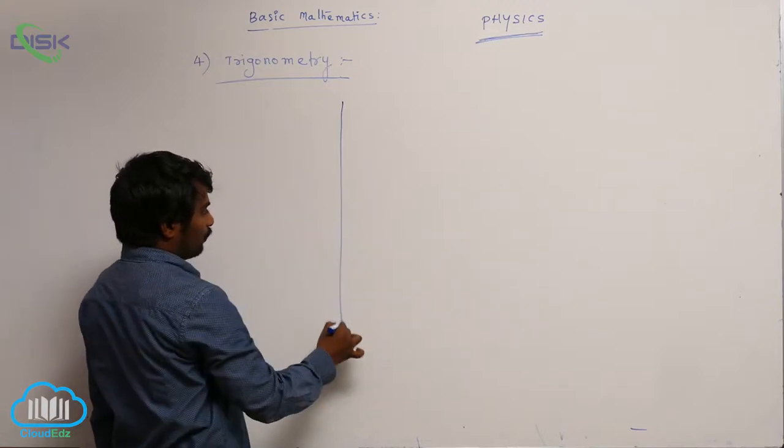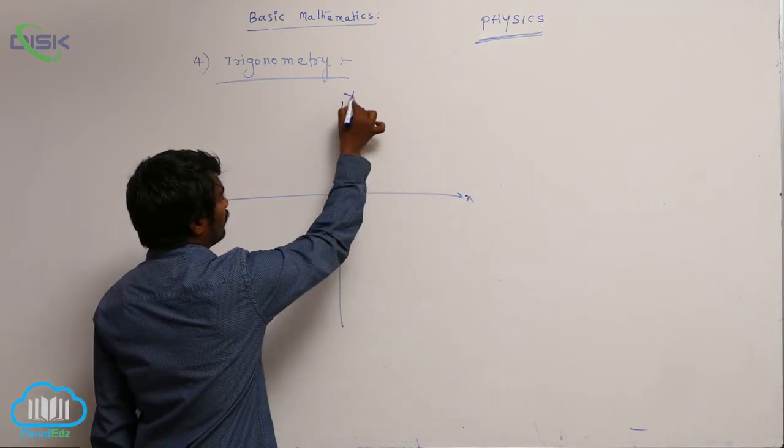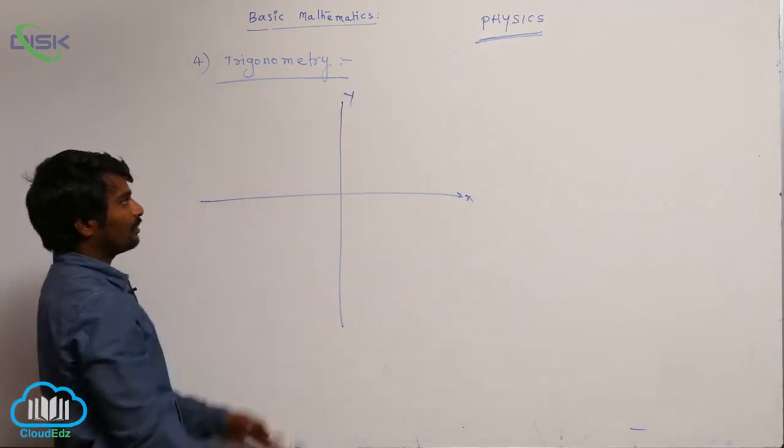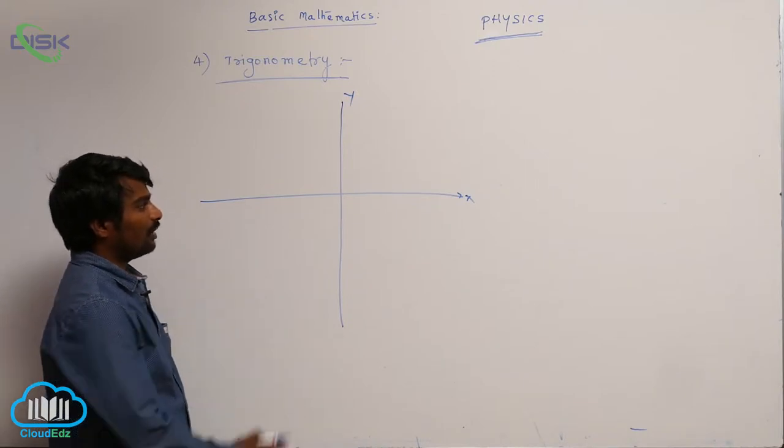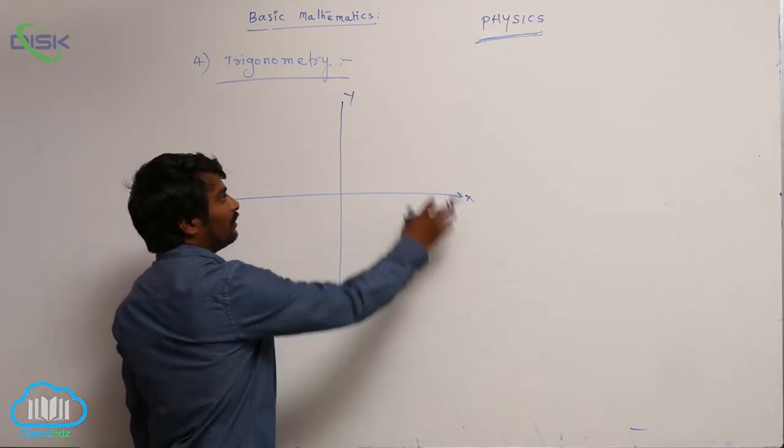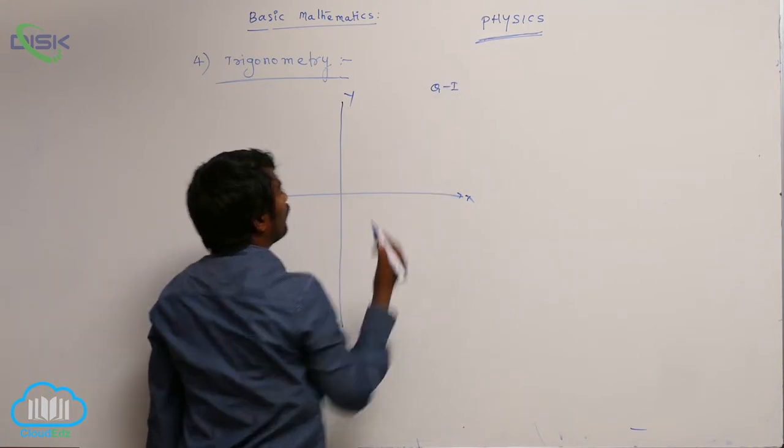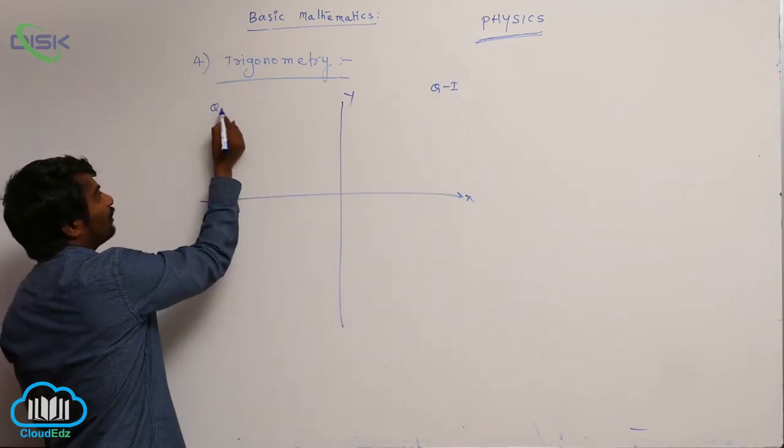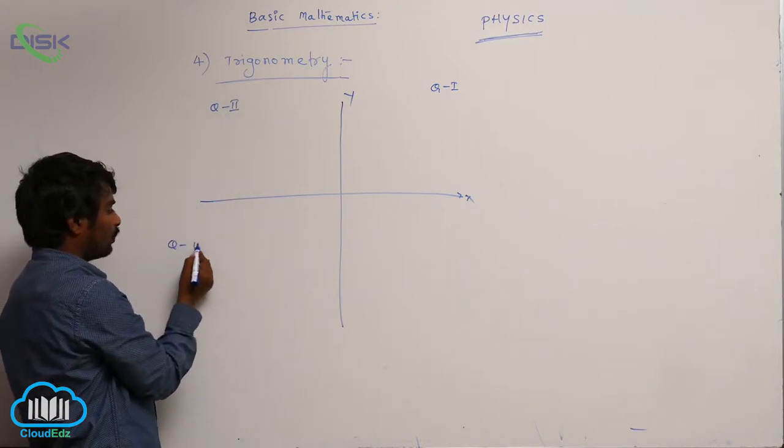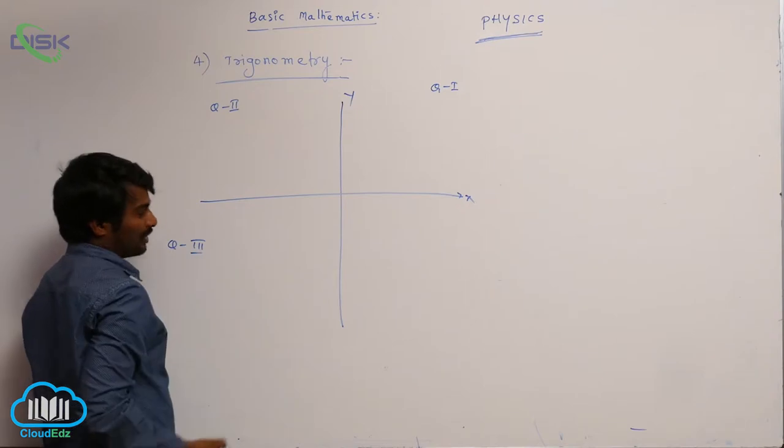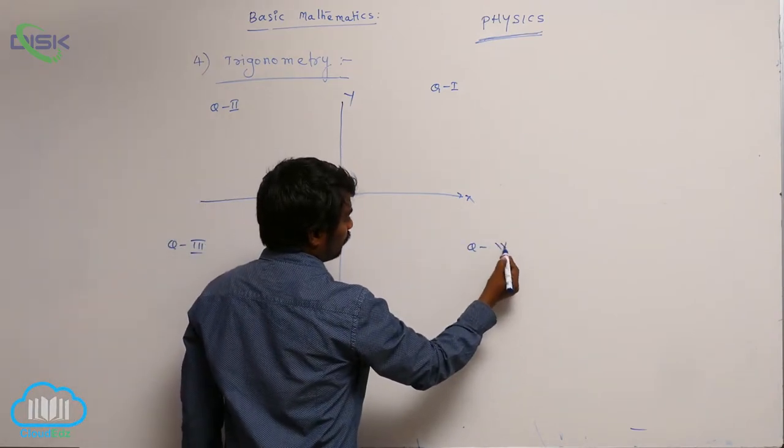The plane is divided into four parts by the x-axis and y-axis. The first part is called quadrant 1, the second part is quadrant 2, the third part is quadrant 3, and the fourth part is quadrant 4.